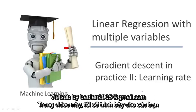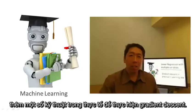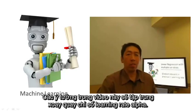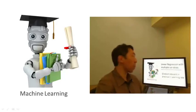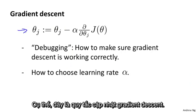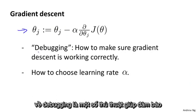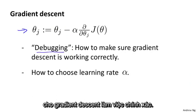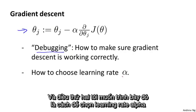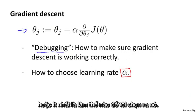In this video, I want to give you more practical tips for getting gradient descent to work. The ideas in this video will center around the learning rate alpha. Here's the gradient descent update rule, and what I want to do is tell you about debugging and some tips for making sure that gradient descent is working correctly. Second, I want to tell you how to choose the learning rate alpha, at least how I go about choosing it.